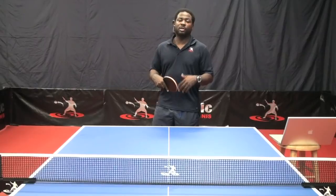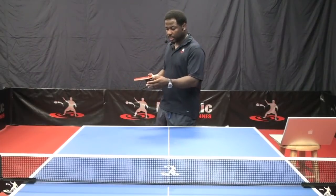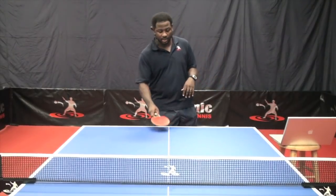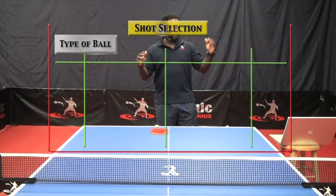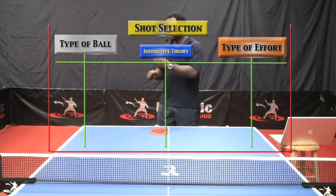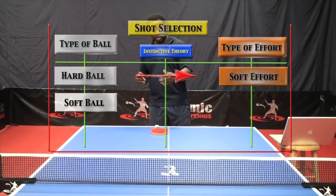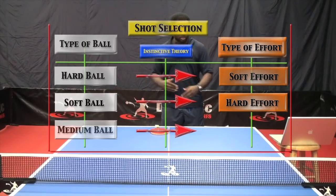Shot selection is the single most important factor to consider when playing any shot. Before you can really get a grasp of shot selection, you have to establish an instinctive theory, and having this theory will help create your thought process. What you have to understand about shot selection is based on time. Let's take a look at the diagram: type of ball plus type of effort equals your instinctive theory. Hard ball equals soft effort; soft ball equals hard effort; medium ball equals medium effort.